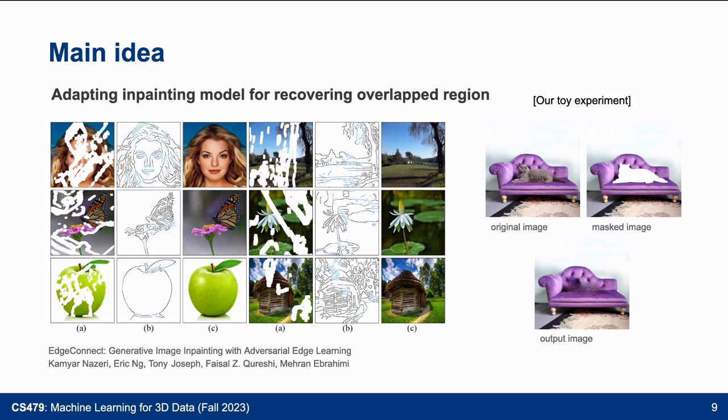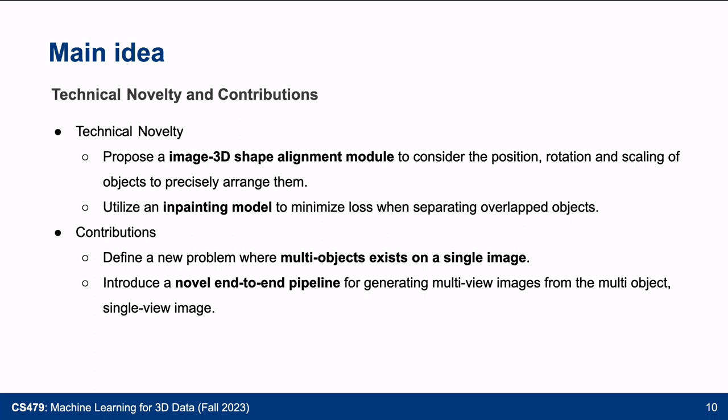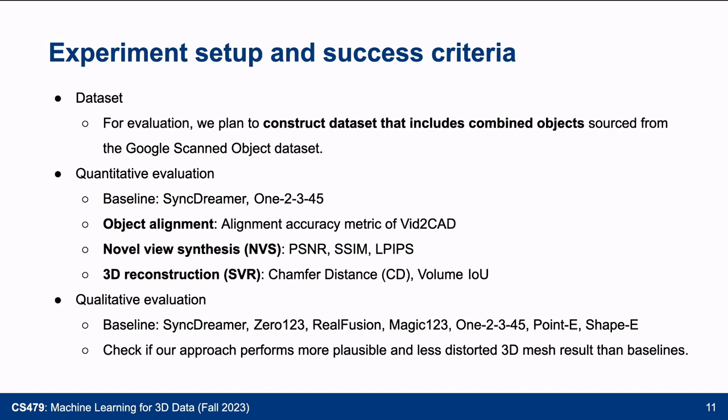For in-painting, we utilize EdgeConnect to recover the overlap region after segmentation. After masking out one object, we obtain only the in-painted remaining image. Our contributions include an image-to-3D shape alignment module considering 9-DOF, an in-painting model to recover overlap regions, and a novel end-to-end pipeline for generating multi-view images from multi-object single-view images. We will construct a dataset from the GSO dataset. Thank you for listening.